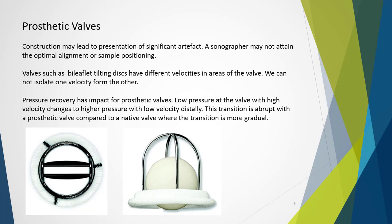Prosthetic valves present challenges in their assessment. Their construction may lead to significant artefact including signal dropout, and the sonographer may not attain optimal velocity alignment or sample positioning. Valves such as bi-leaflet tilting discs have different velocities across areas of the valve. When open, the orifice between the leaflets is smaller with higher velocities compared to flow going over the leaflets. Typically we cannot isolate one velocity from another, so we end up with a slightly overestimated average velocity through the valve.